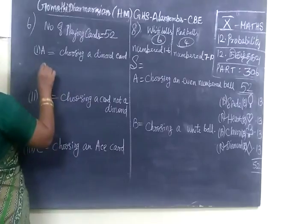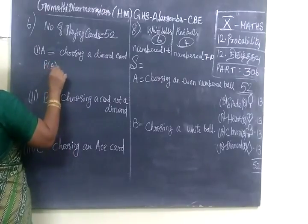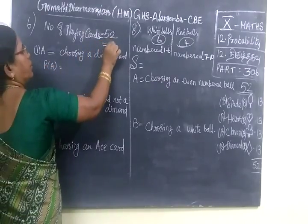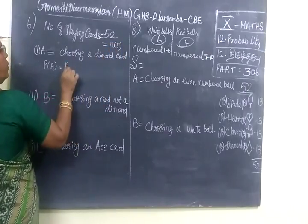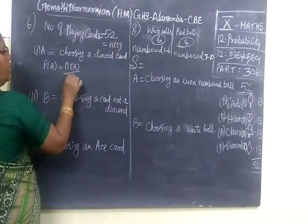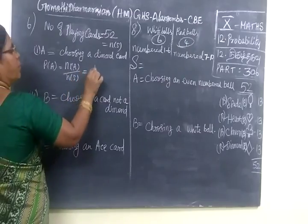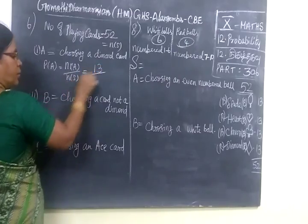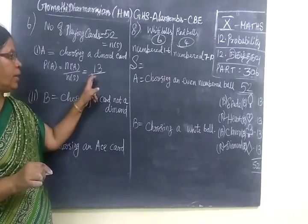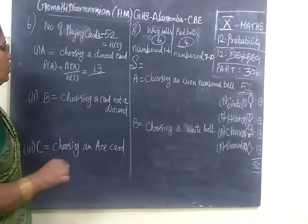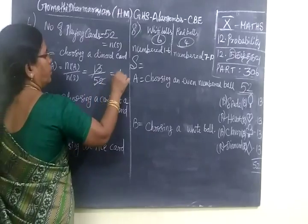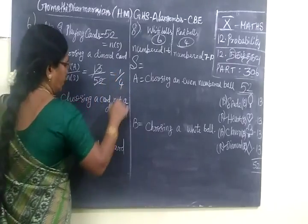So P of A equals N of A by N of S. Here N of S equals 52. P of A equals N of A by N of S. N of A is 13 — there are totally 13 diamond cards. N of S is 52. So if you cancel, you get 1 by 4.